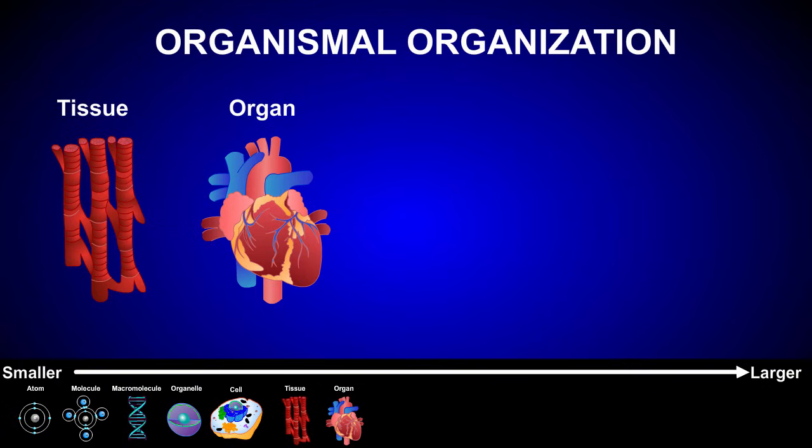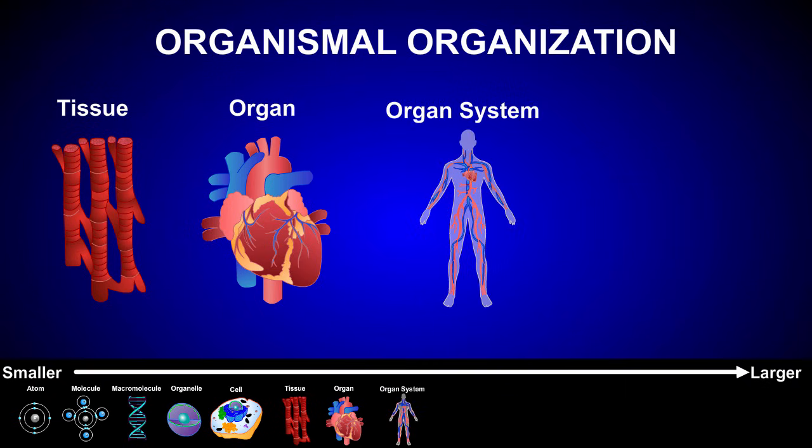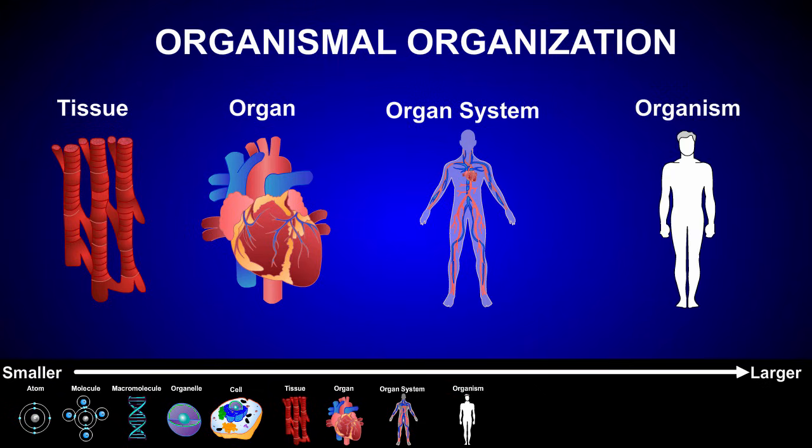Organs, in turn, work together in organ systems. The circulatory system, for example, consists of the heart, blood, and blood vessels that all work together to move nutrients to the cells of the body and remove waste materials from these same cells. And finally, various organ systems work together to form a complex organism, such as a human.